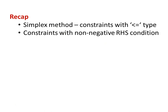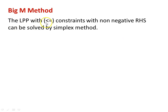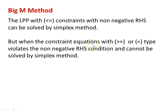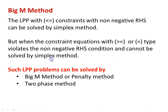But in practice, there are constraints other than less than or equal to symbol. So in those cases, we have to solve the problem by the Big M method or two-phase method. The LPP with less than or equal to constraint with non-negative right hand side can be solved by the simplex method. In other cases, we solve the linear programming problem either by Big M method — also called the penalty method — or two-phase method. In this lecture, we will discuss the Big M method, and in the next lecture, we will talk about the two-phase method.